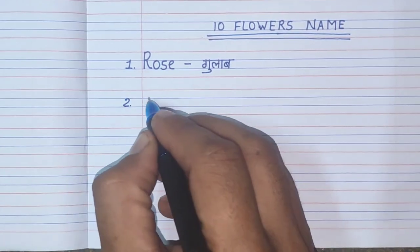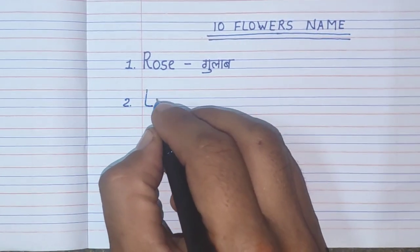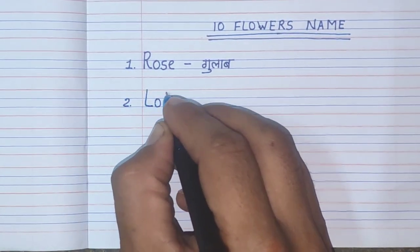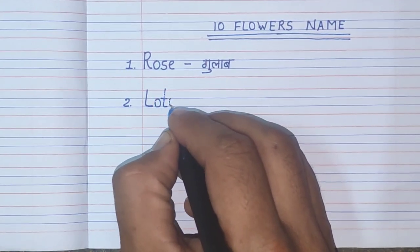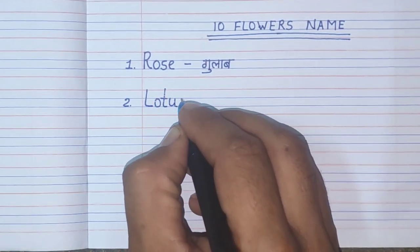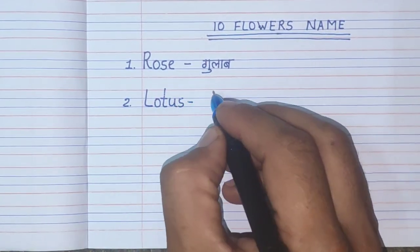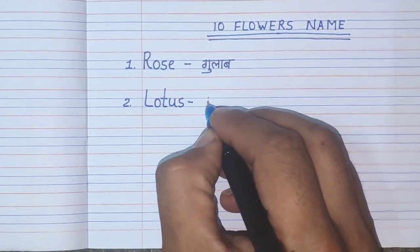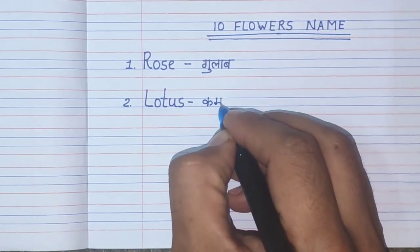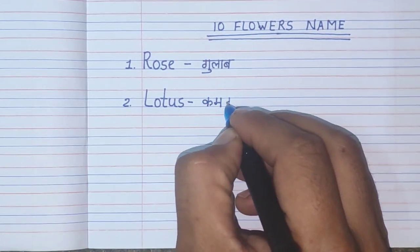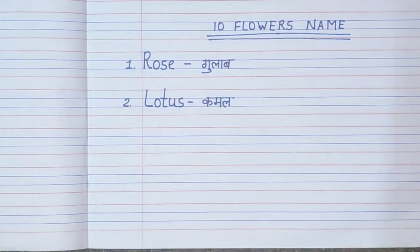Number 2. L-O-T-U-S. Lotus. Lotus means Kamal.